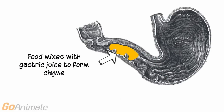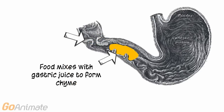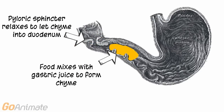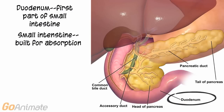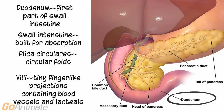Food mixes with the secretions of the stomach, called gastric juice, to form a pasty substance called chyme. The pyloric sphincter relaxes to let chyme out of the stomach and into the first portion of the small intestine called the duodenum. The small intestine is built for absorption with a large surface area. Special structures include plica circularis, which are circular folds that increase the surface area, and villi, which are tiny finger-like projections containing blood vessels and lacteals, part of the lymphatic system.